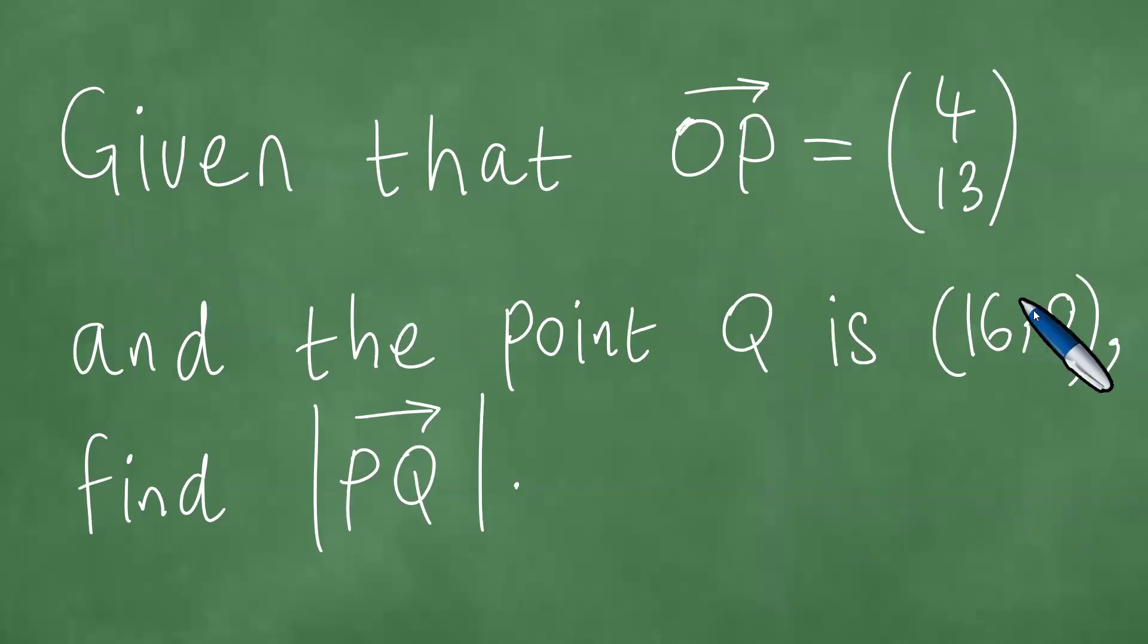In this lesson, we shall solve this vector question. Given that the position vector of P is 4 and 13, and the point Q is 16 and 8, find the length of the vector PQ, and we proceed as follows.